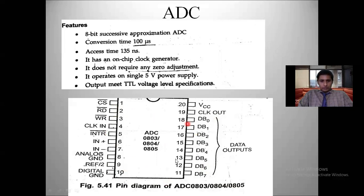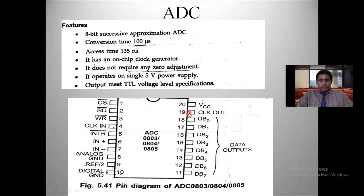In summary, the 20 pins of ADC have the following functions: INTR bar is 1 during conversion and 0 when conversion is completed — the processor uses this to know when ADC work is done. Read bar activating means conversion is complete and the processor reads digital data. Write bar activating means analog data is being processed. CS bar activates the ADC chip. Two grounds are present — analog and digital. Clock-in and clock-out are connected to external R and C through a NOT gate to generate the required clock pulse.